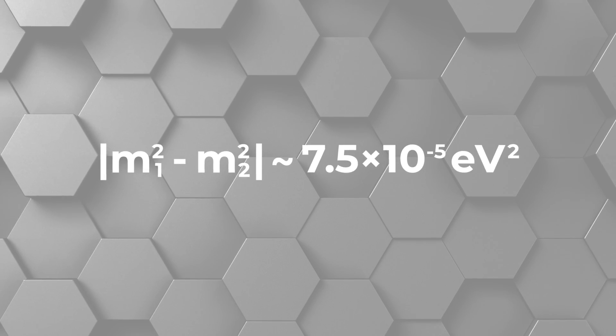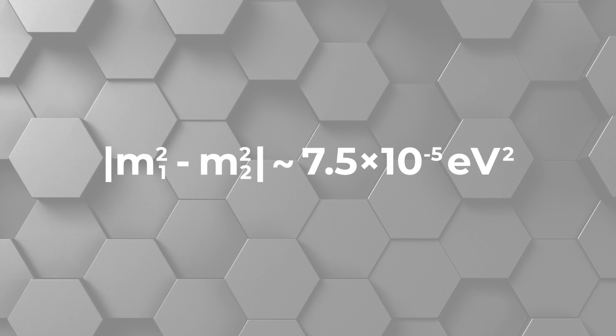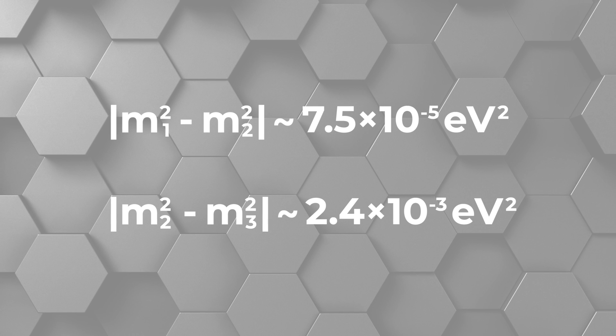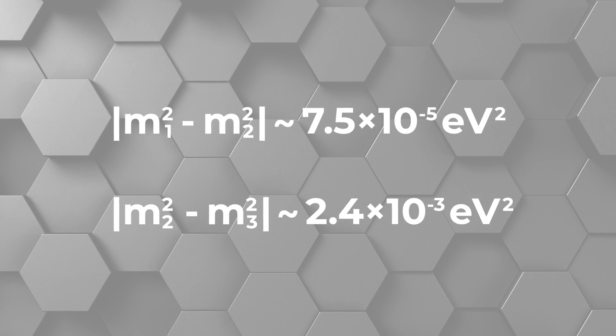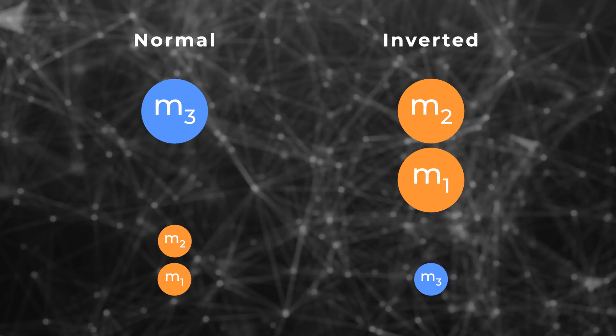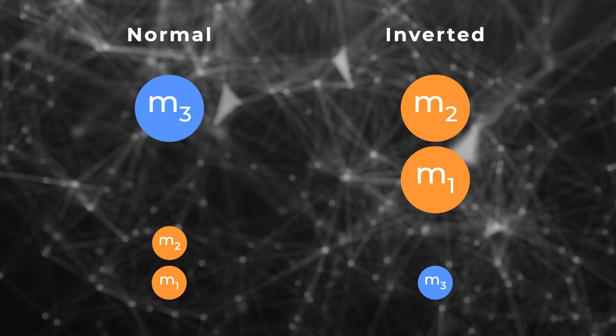Yet there is another complication. We don't know the differences between the masses of nu1, nu2, and nu3 directly — that would be too easy. Instead, what we know is the difference between the squares of the masses. For instance, mass 1 squared minus mass 2 squared is about 7.5 times 10 to the minus 5 electron volts squared. The third neutrino has a very different mass: mass 2 squared minus mass 3 squared is about 2.4 times 10 to the minus 3 electron volts squared. What we don't know is whether m3 is big and m1 and m2 are small, or the other way around. We're still trying to figure that one out.